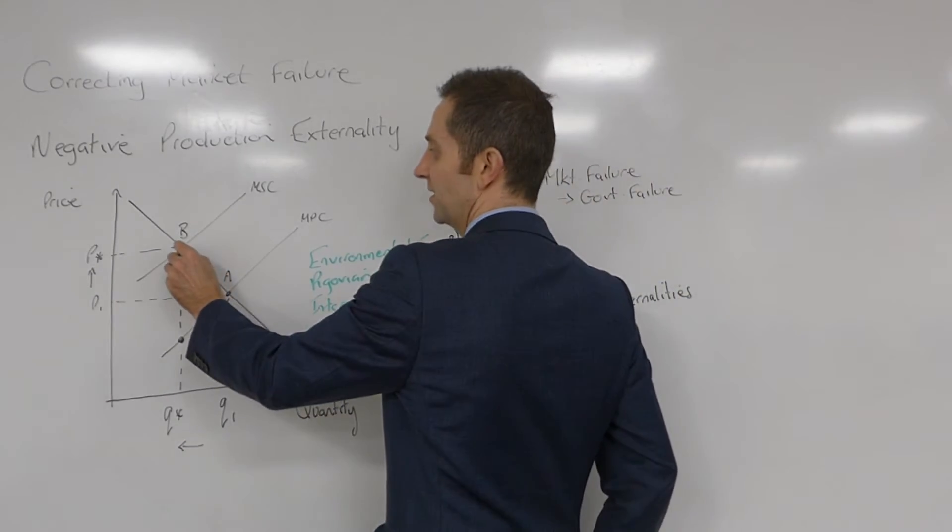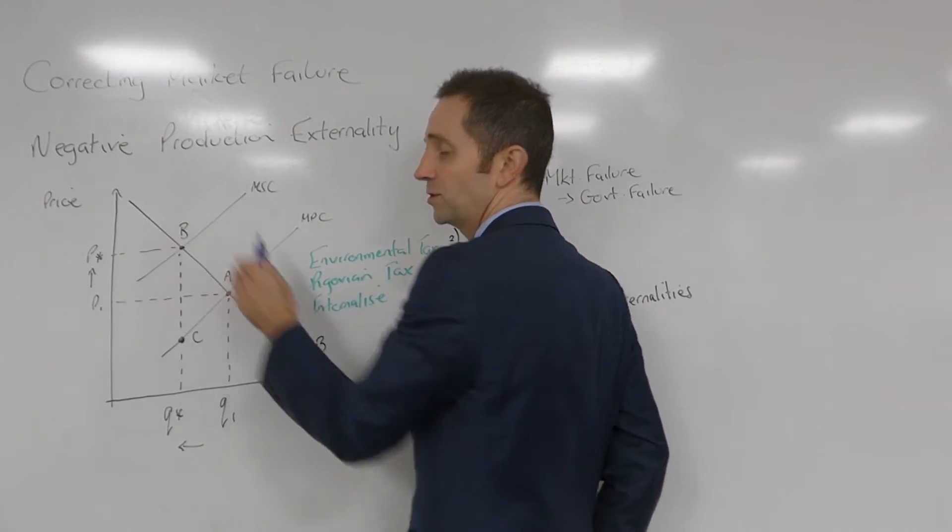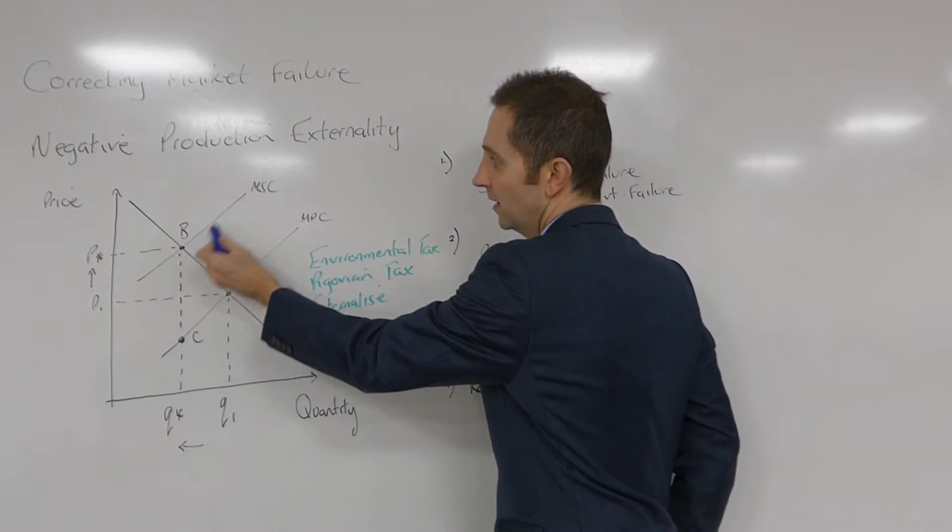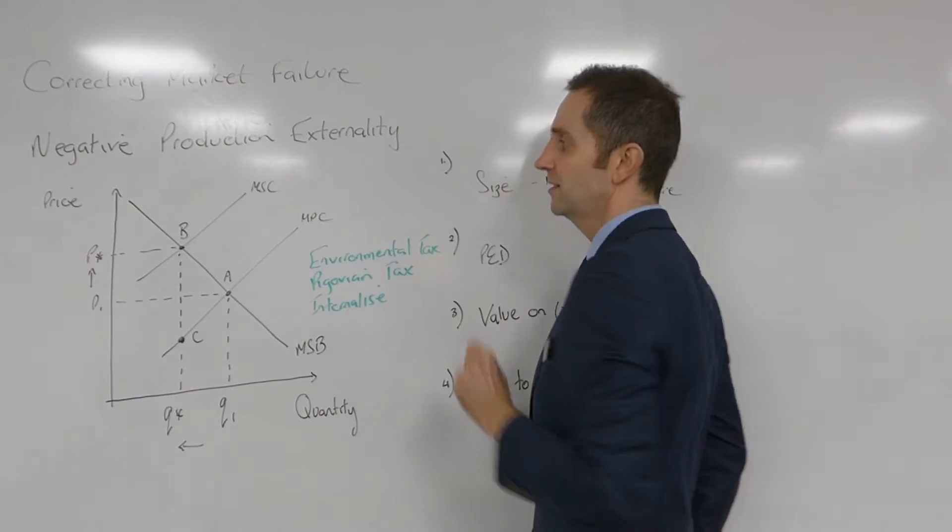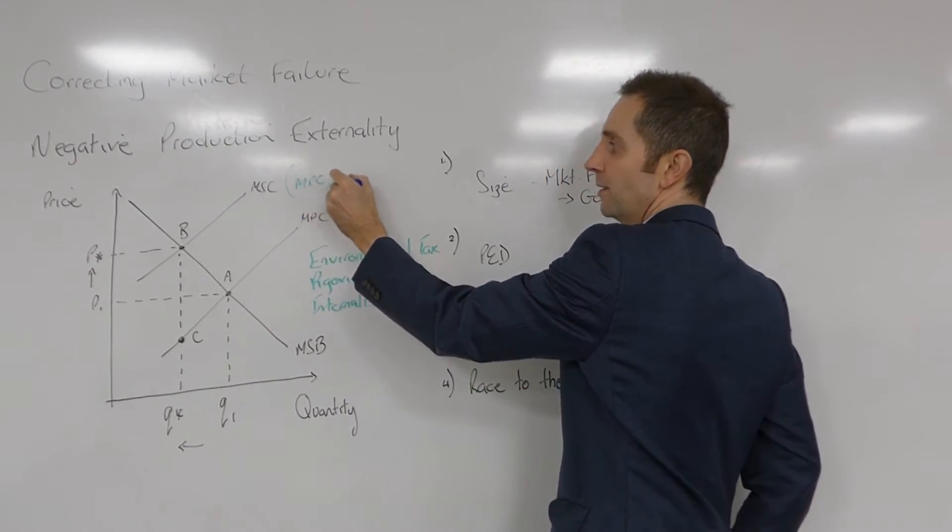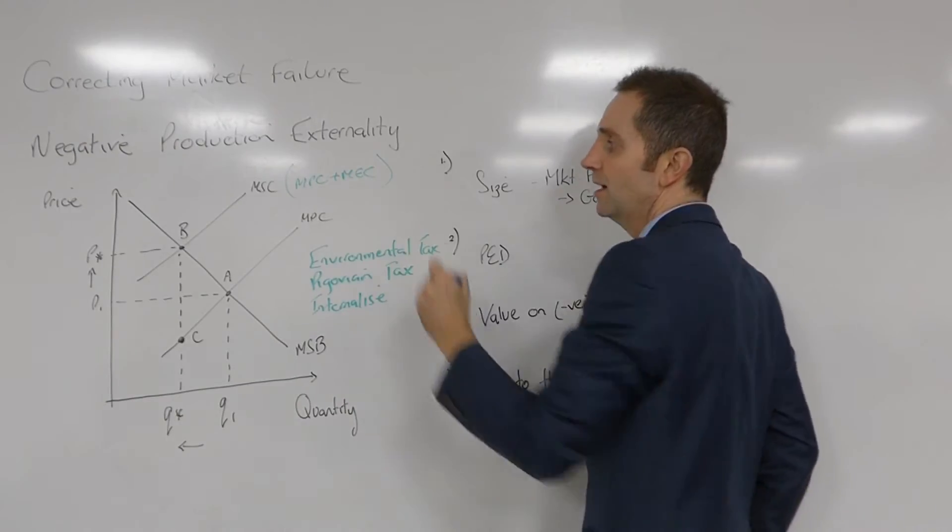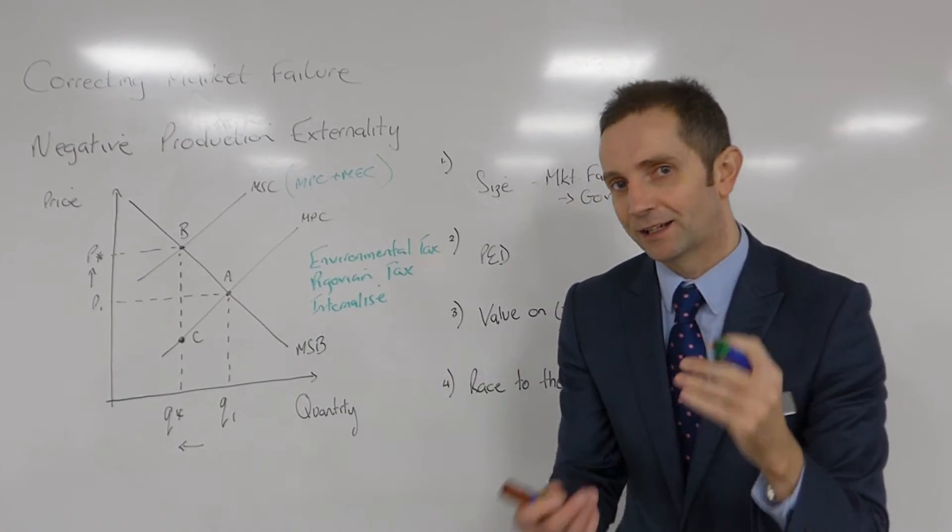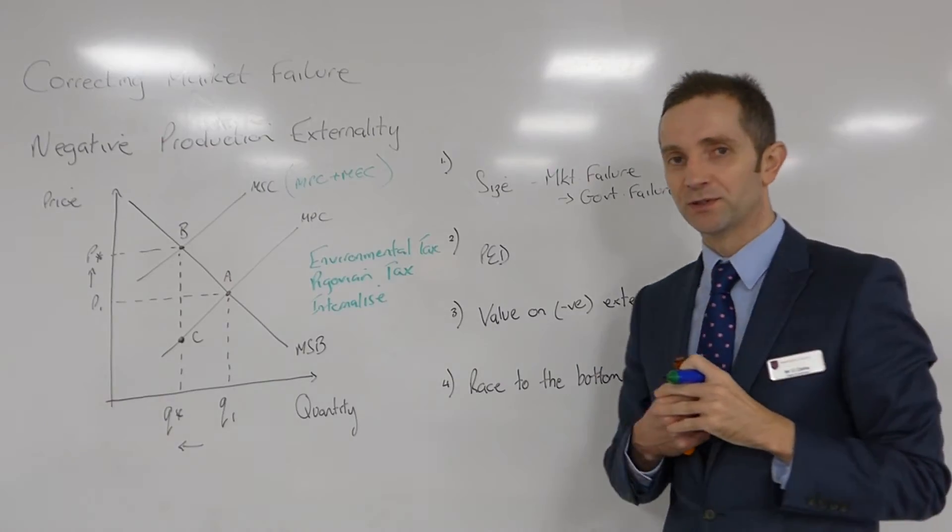Well, in this instance, the size of the tax is the vertical distance between the two curves, MSC and MPC. Because, as you know, MSC equals MPC plus the MEC. And the EC is the external cost, the cost being imposed upon society.